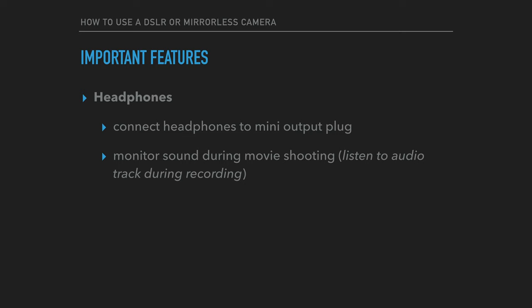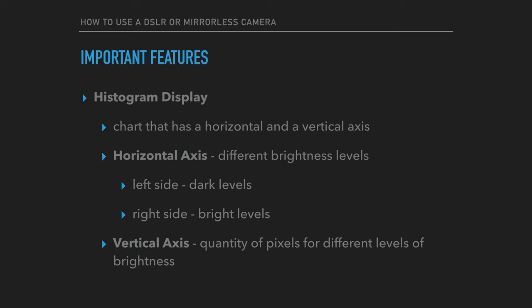Another feature is headphones. Most good semi-pro and professional DSLR and mirrorless camera systems come with a 3.5mm diameter mini output plug where headphones can be connected. This plug allows the camera person to monitor sound during movie shooting. Though it is possible to record audio using the visual audio meter, listening to the audio track as it is recorded provides an extra level of security and confidence that the audio was recorded correctly.